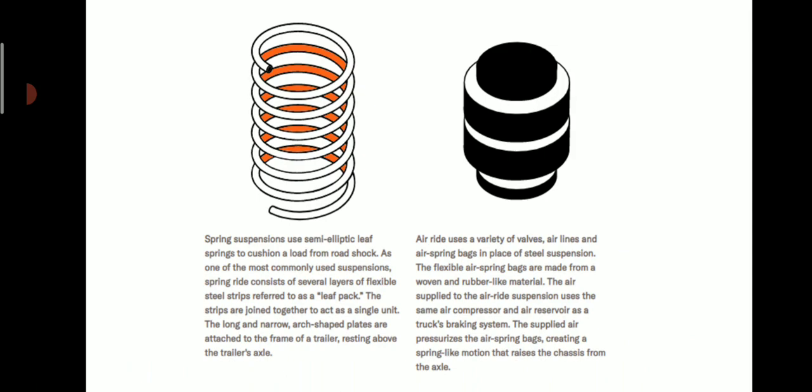This is a distinction between air suspension and spring suspension. Spring suspension uses semi-elliptic leaf springs to cushion the load from road shocks, and is one of the most commonly used suspension systems. A spring ride consists of several layers of flexible steel strips referred to as a leaf pack. The strips are joined together to act as a single unit. The long and narrow arch-shaped plates are attached to the frame of the trailer and rest above the trailer's axle.